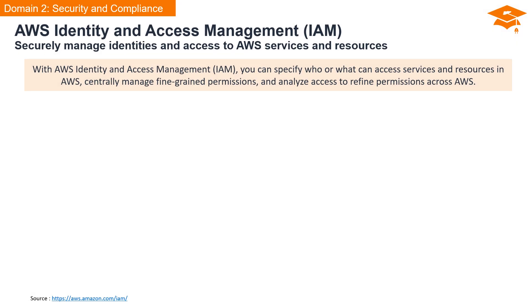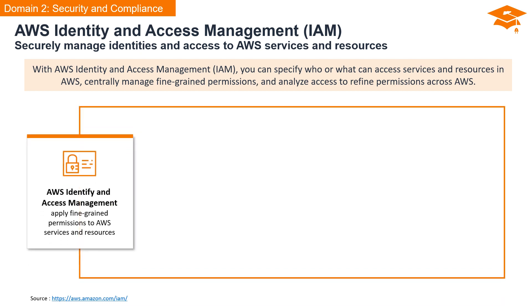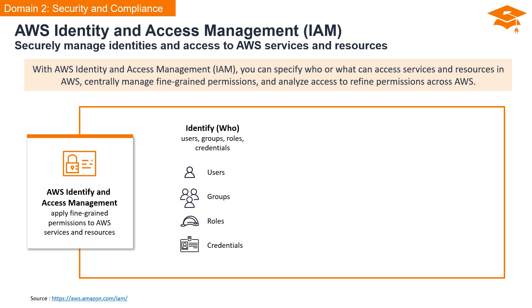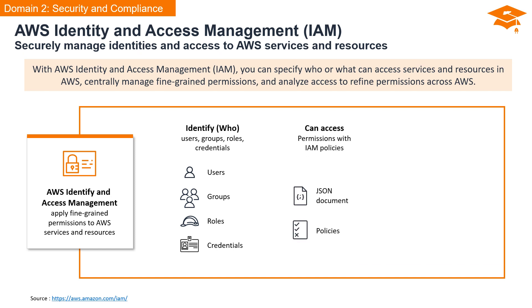AWS Identity and Access Management, or IAM, is a pivotal service that allows you to securely manage identities and control access to AWS services and resources. IAM enables you to apply fine-grained permissions to AWS services and resources, allowing you to precisely define who or what can access various AWS services. IAM Identity determines who accesses AWS resources, including users, groups, roles, and various credentials.